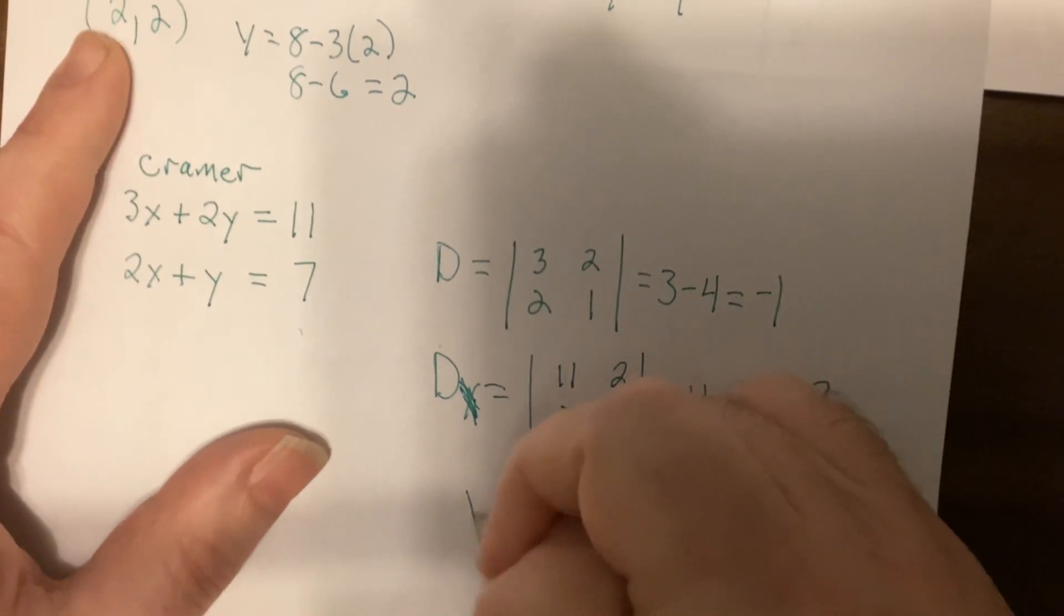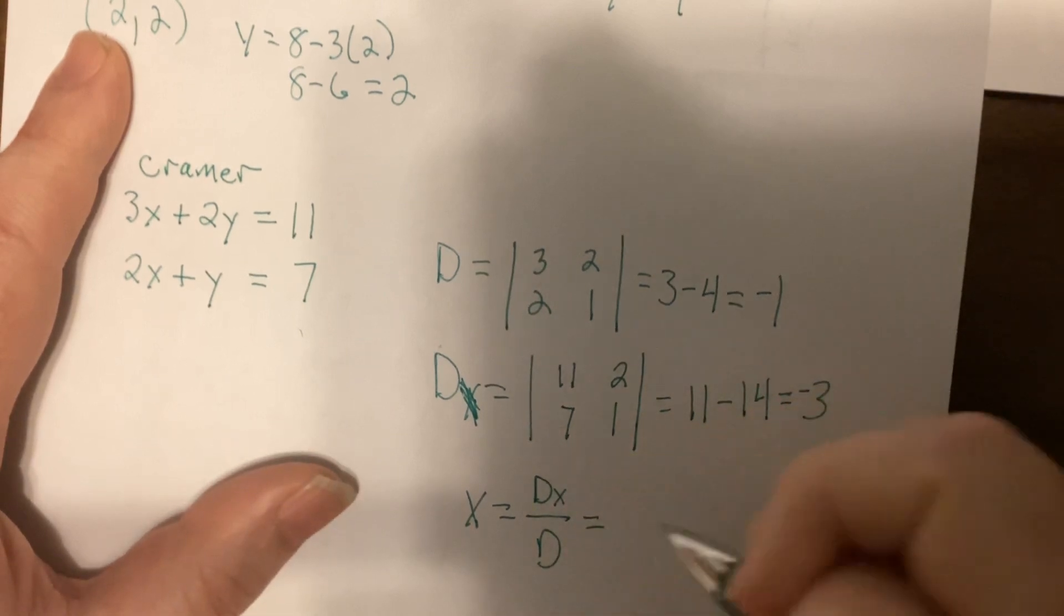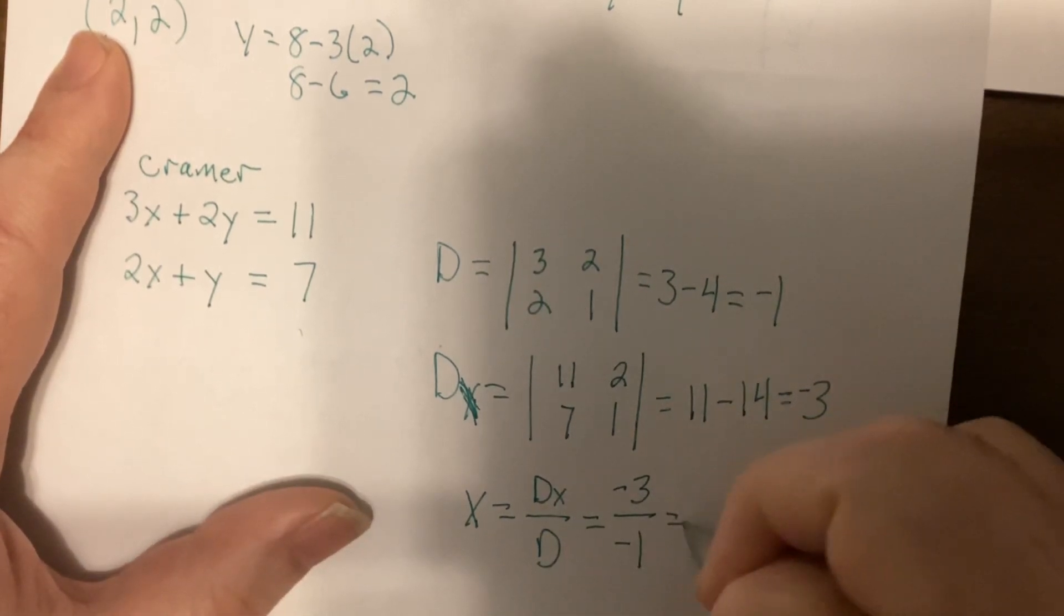Then x is Dx divided by D, which in this case would be negative 3 divided by negative 1, which is 3.